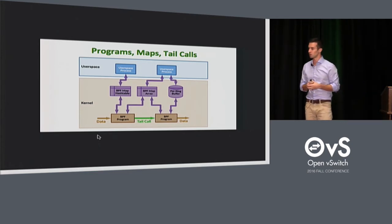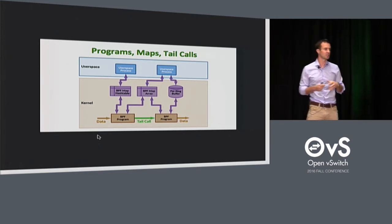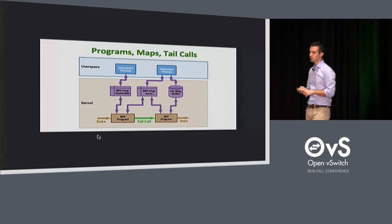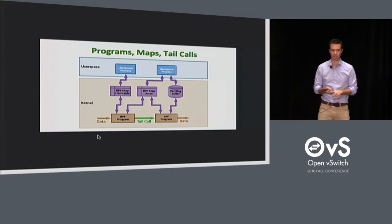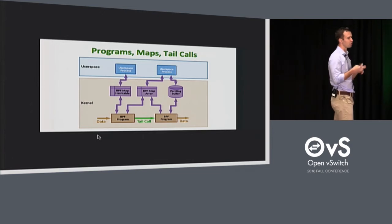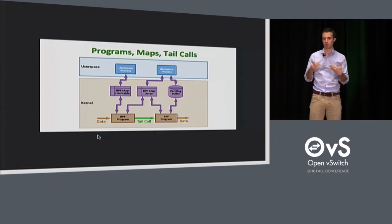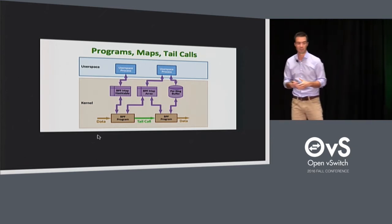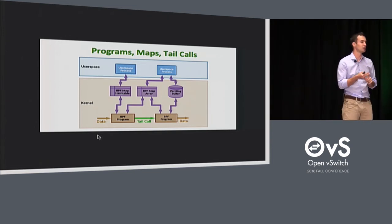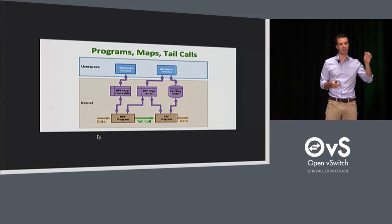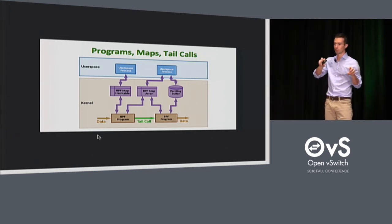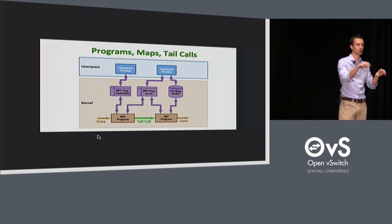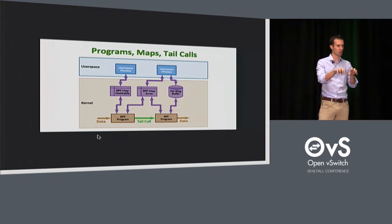BPF has some limitations. The Linux kernel-specific limitation is that each program has a limit of 4K instructions, and a complexity limit for verifying code of 64K. If there was no limit on verification, an attacker could present a program so complex the kernel would never finish verifying it. However, there are tail calls which allow calling into other programs — it's not a function call, it doesn't build up a stack frame, it's more like an exec system call: you're replacing your existing BPF program with another one and start executing.